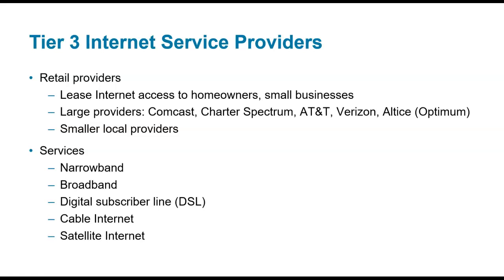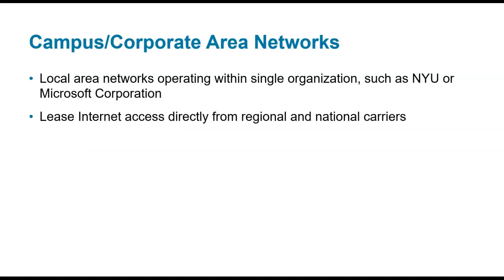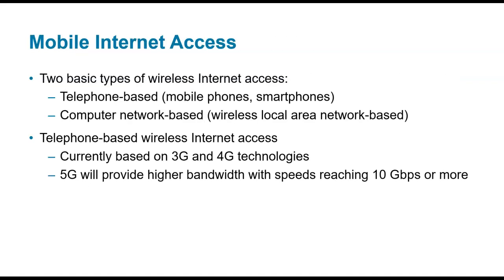Campus area networks can be fast because we locally control our networks. At St. Francis, all buildings and offices are networked, only competing with local traffic. A local area network allows everyone in an organization to connect to each other and to a centralized internet connection. What's happening locally might be faster than your actual connection to the internet.